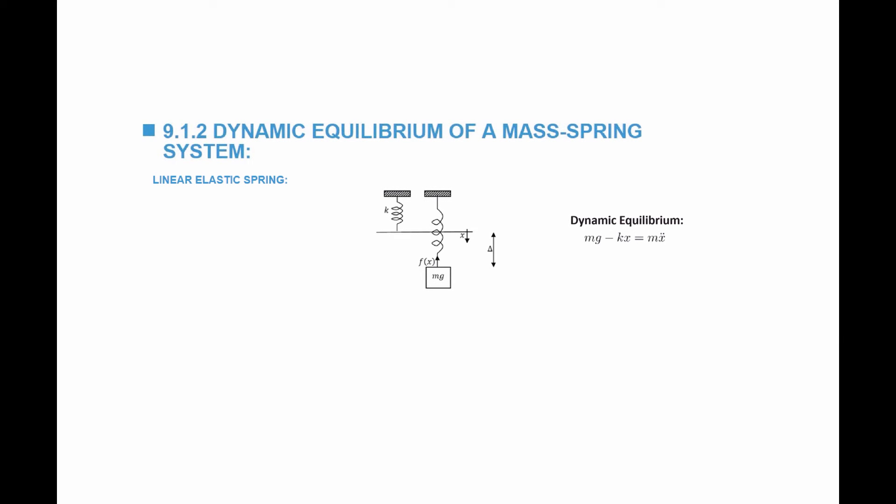The last situation we are going to study is the dynamic equilibrium of a mass-spring system. We study the equation of motion assuming external forces are not in equilibrium: mg acting downwards minus kx acting upwards equals mass multiplied by acceleration, so mg minus kx equals mx double-dot. Rearranging: mx double-dot plus kx minus mg equals zero. Assuming initial conditions where velocity x-dot equals zero when x equals zero, we get x equals (mg/k) multiplied by (1 minus cosine(√(k/m) · t)).